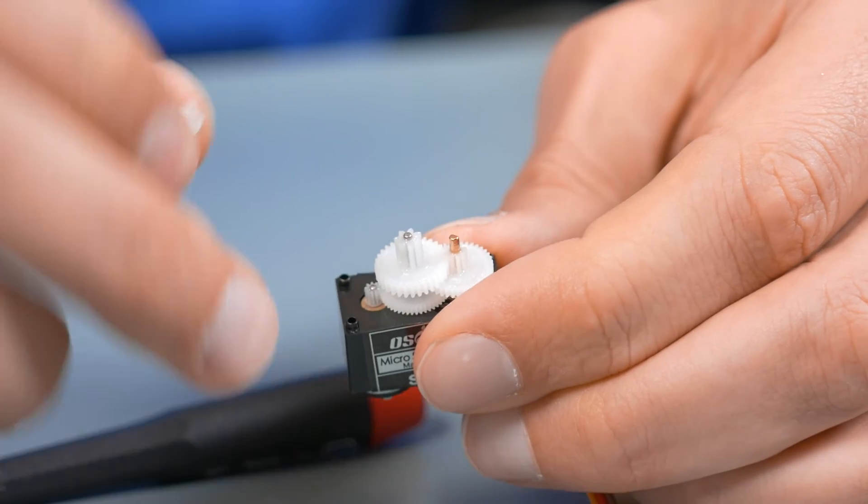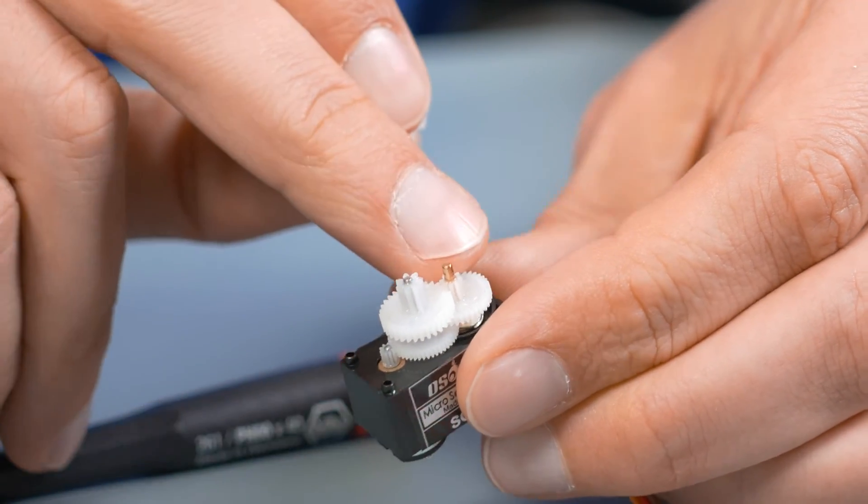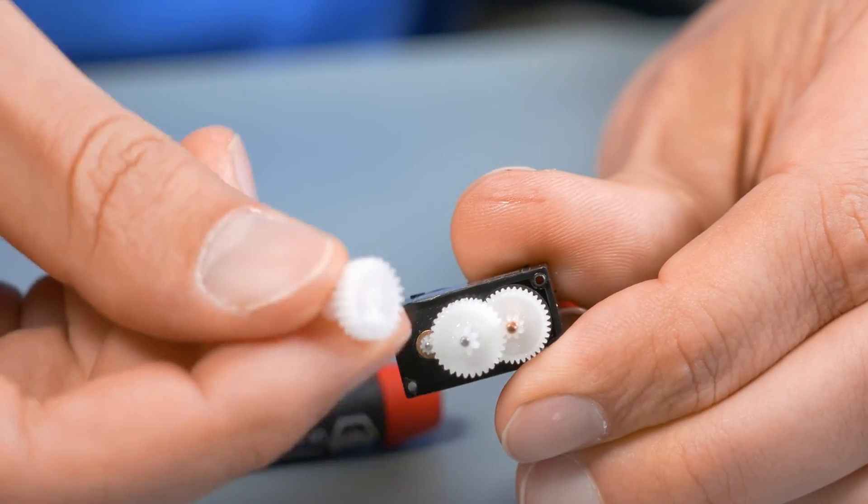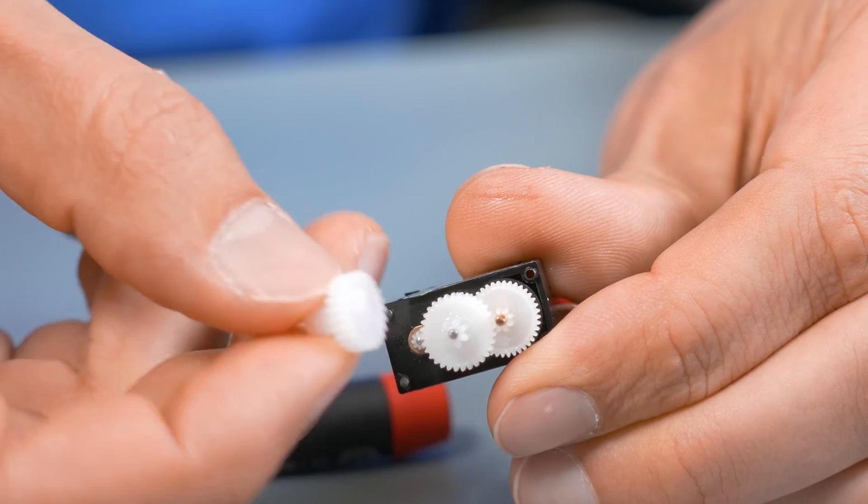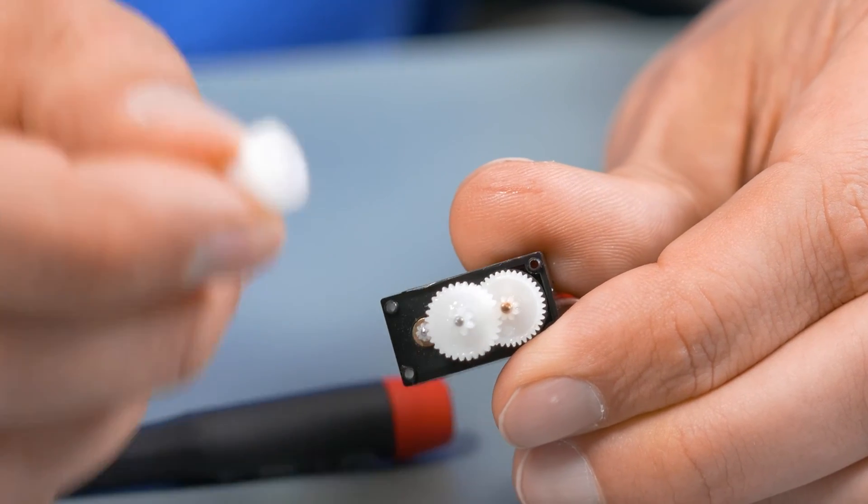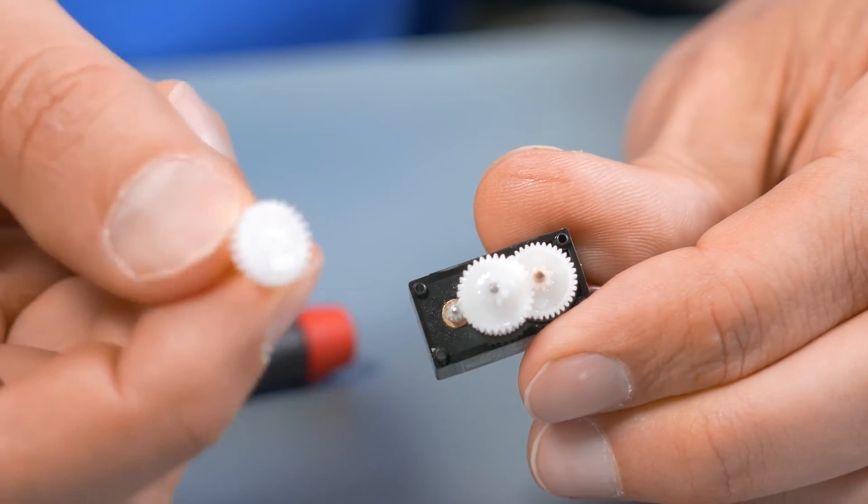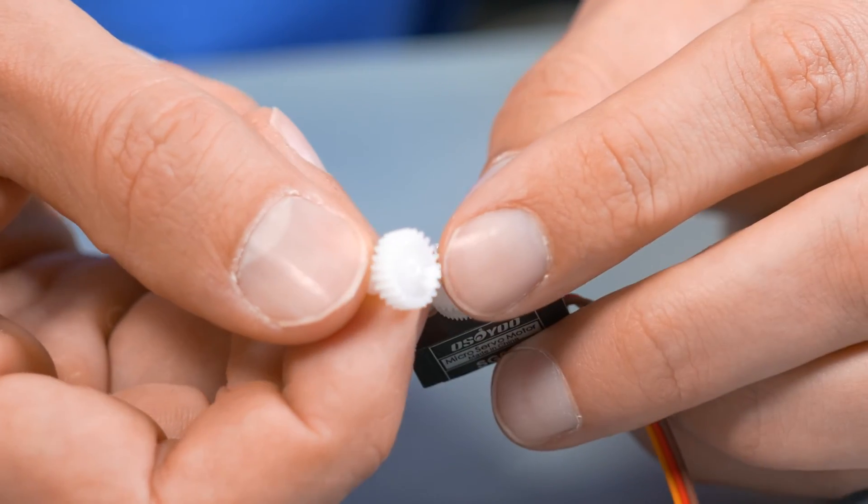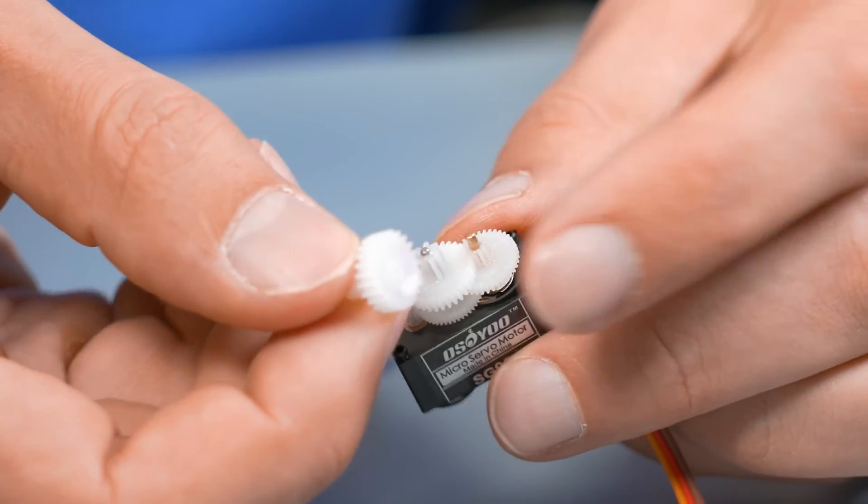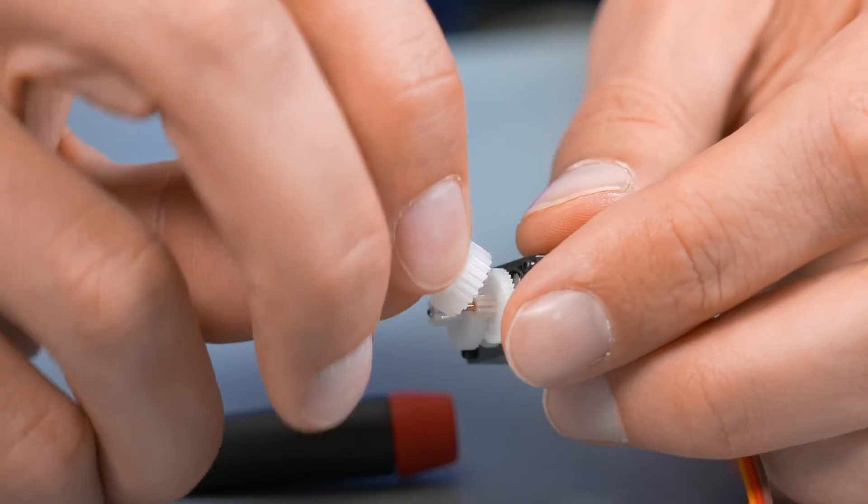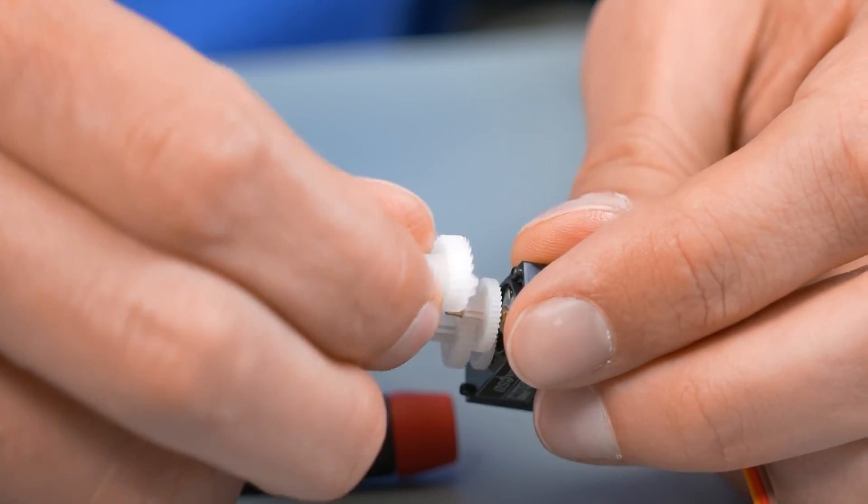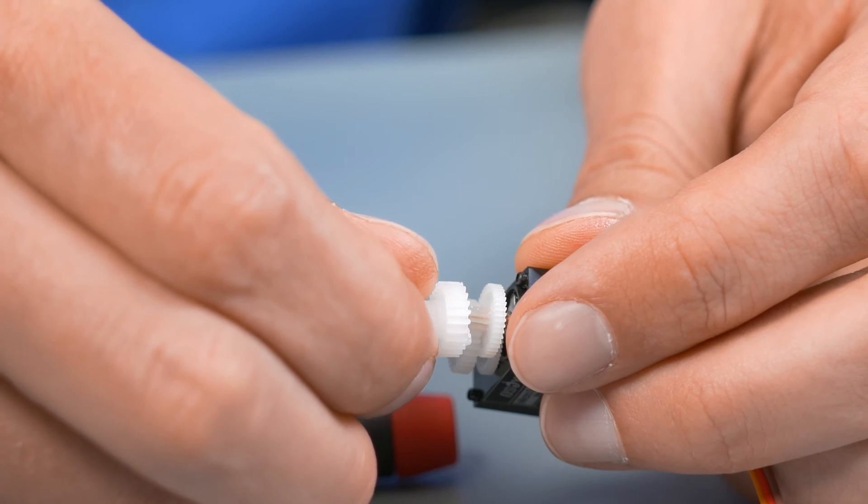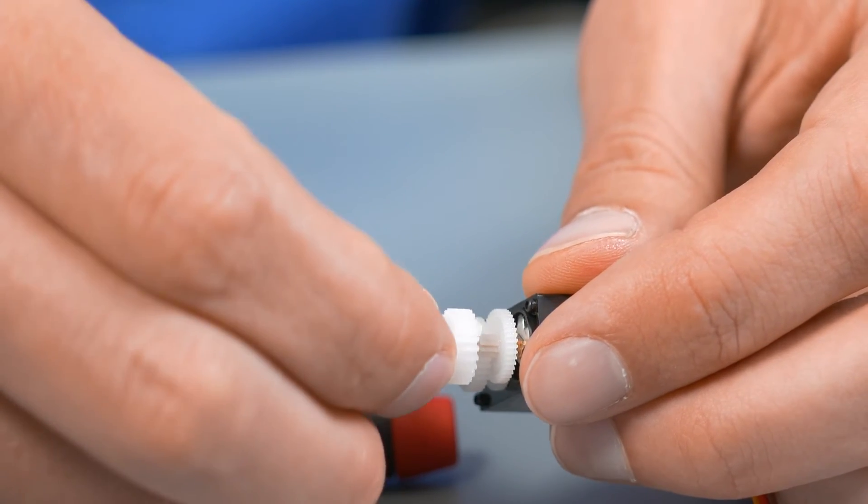There we go. So you can see there is that flat piece right there that goes in to this so that as this turns, it turns the potentiometer. So we're going to have to make some modifications to this so that one, it doesn't actually turn the potentiometer and two, to get rid of this little spot right here that up until this point is going to jam into things and make it so you can't turn more than a little bit more than 180 degrees.